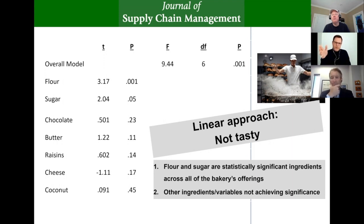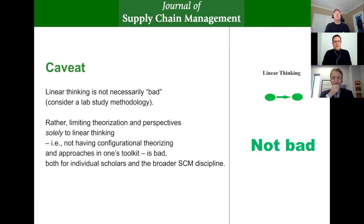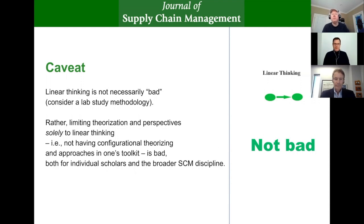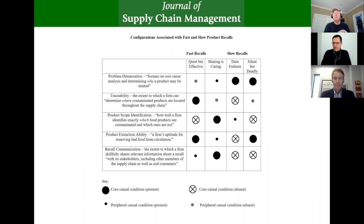Put simply, this would be pretty bad advice to a baker to say more sugar is always better. Good advice would instead be: come up with some clever combinations that people like. What we recommend with our article is that we complement correlational thinking with a configurational mindset. That configurational mindset is present in our daily life, as we saw with the bakery example.